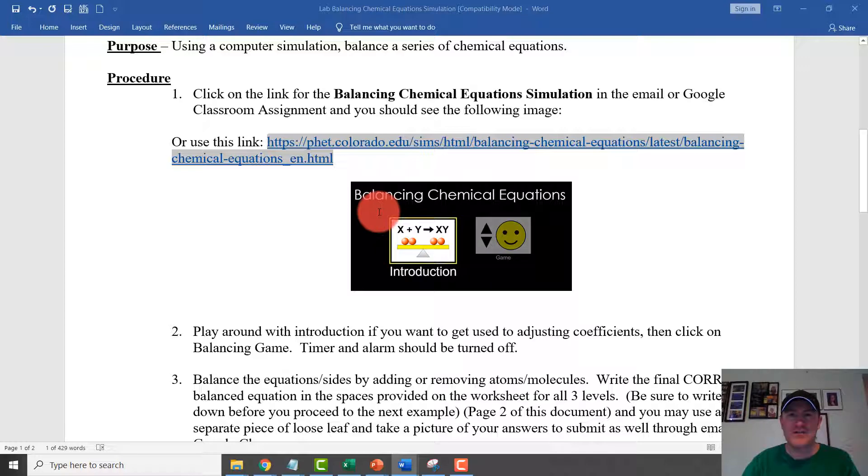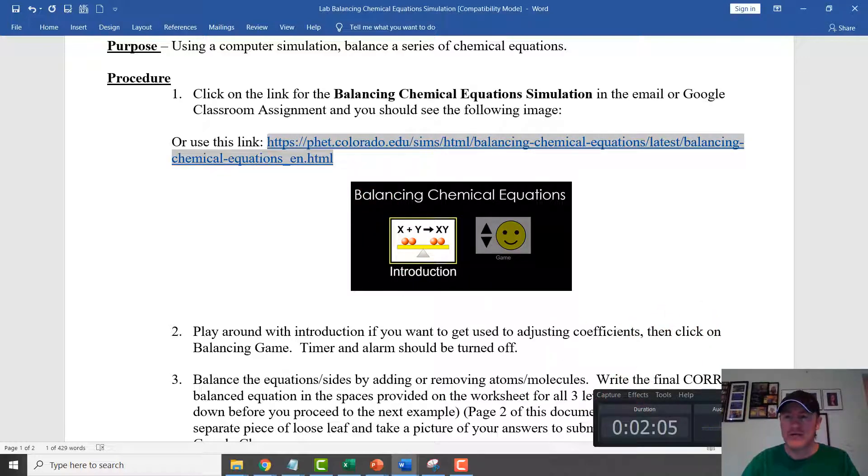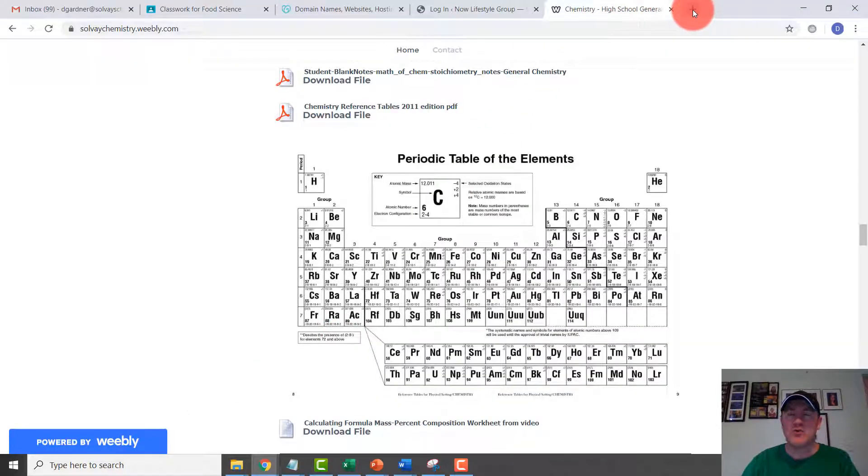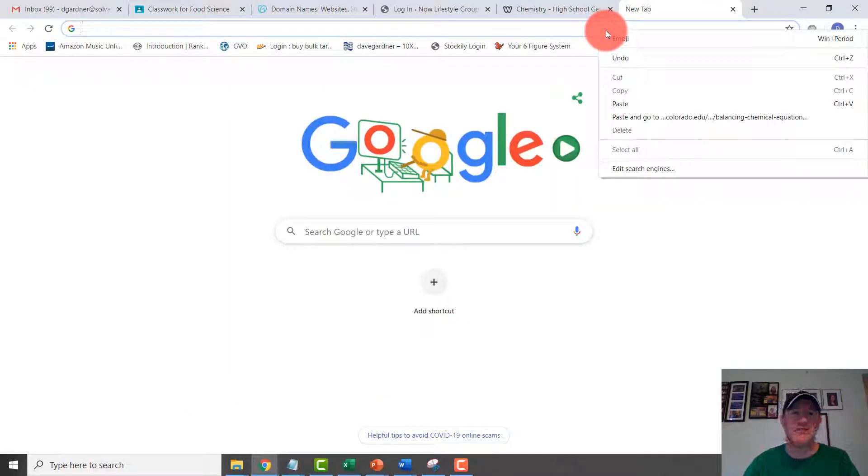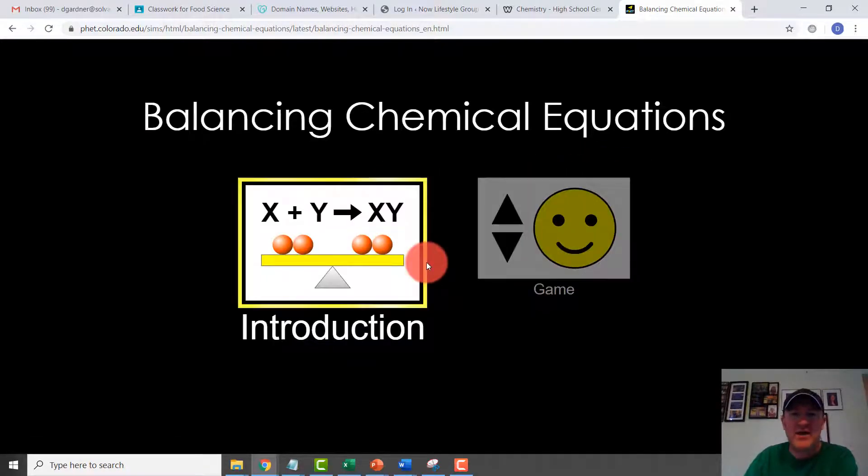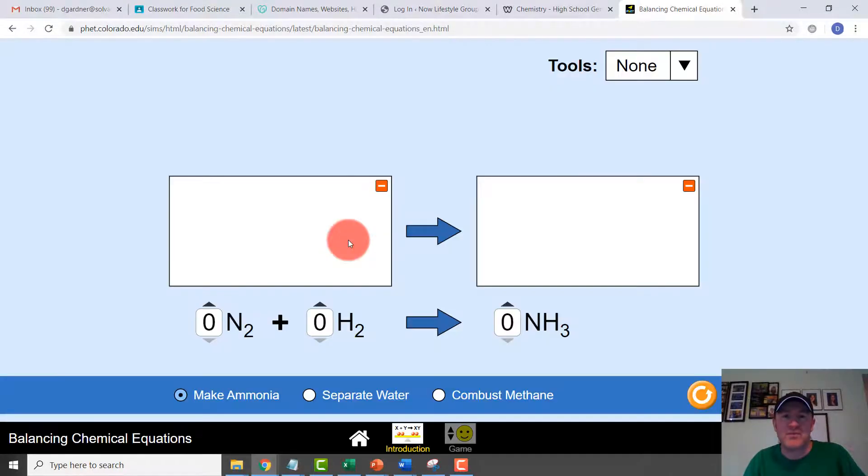And we're going to be looking for this image. If we open up a window and just click the link either from the email or click the link from the Google Classroom. If we paste and go to that link, you'll get this that will then populate. And I want to just walk you through what you should be seeing. We'll do the introduction together, and then you can play around and test the introduction to become familiar with it. Then you're going to get into the game, and I'll show you how that game works as well.